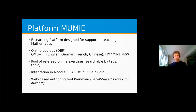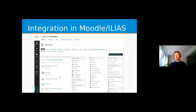We'll see that later when I show some examples. Let me show you how the integration in ELIAS looks - that's the ELIAS of the FH Aachen. There you can just add a new object, and here you see the MUMIA task. You can select it from the pool browser and import it into your ELIAS course. Of course, one has to install the plugin first, but we've already done that.